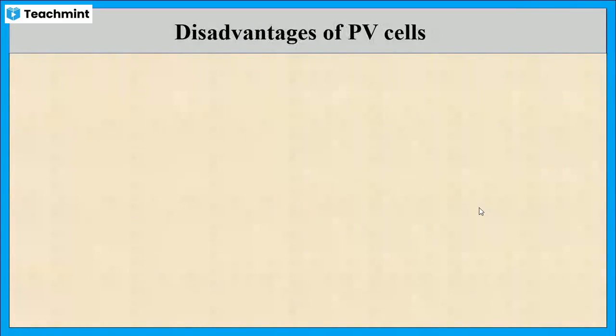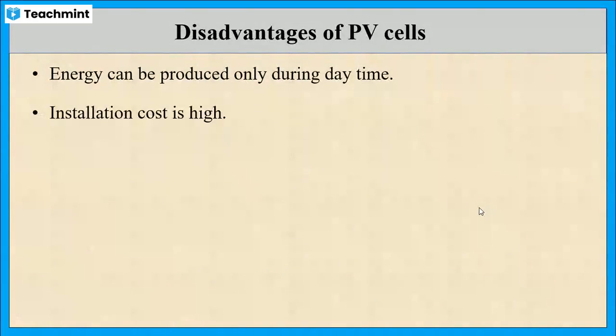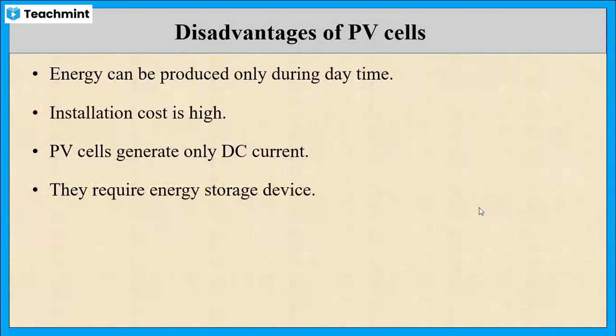Now let us see the disadvantages of PV cells. The energy can be produced only during daytime. Its installation cost is high. PV cells generate only DC current, and these cells require separate energy storage devices. These are some of the disadvantages of solar cells.